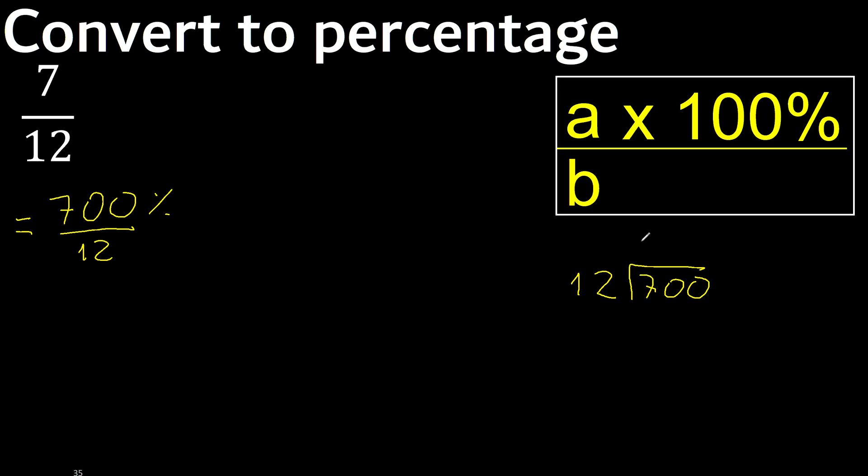12 multiplied by 6 is 72, is greater. 12 multiplied by 5 is 60. OK, is not greater. Subtract, next.